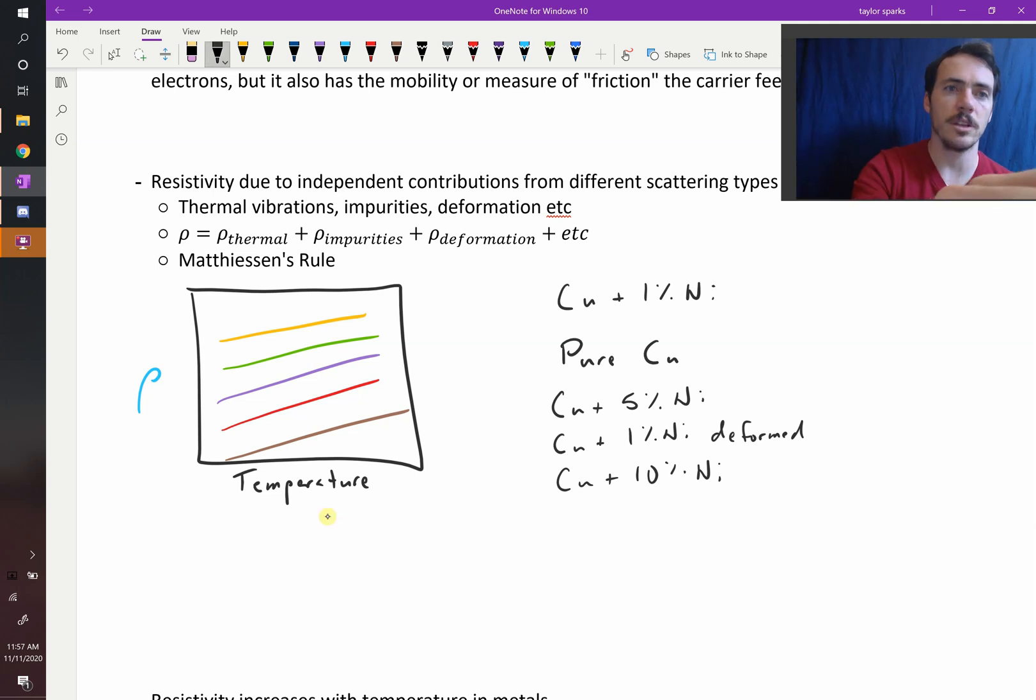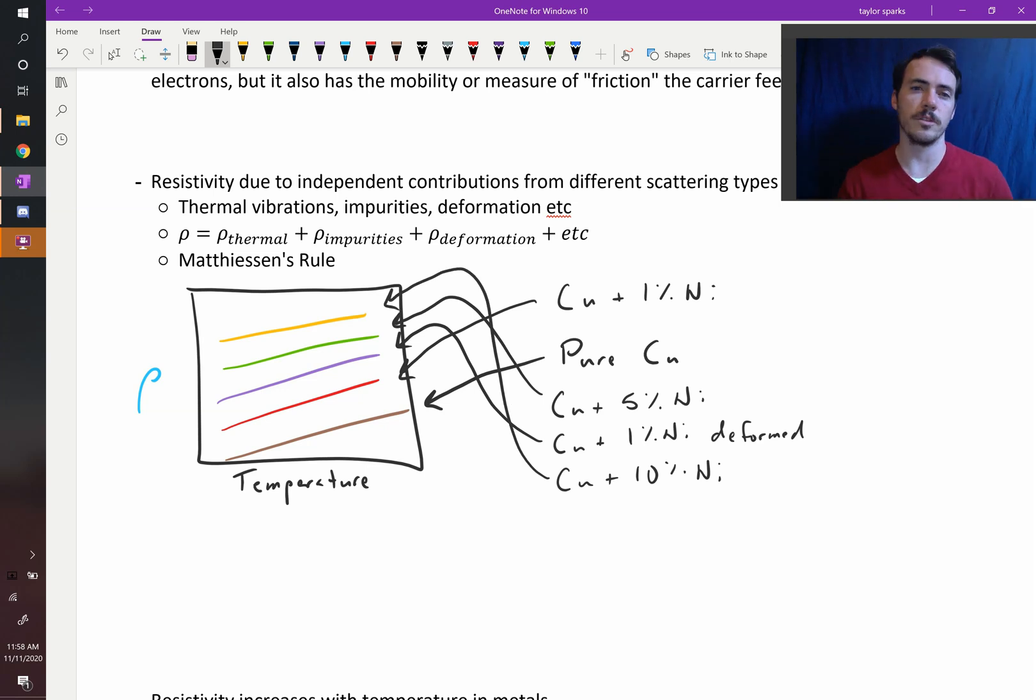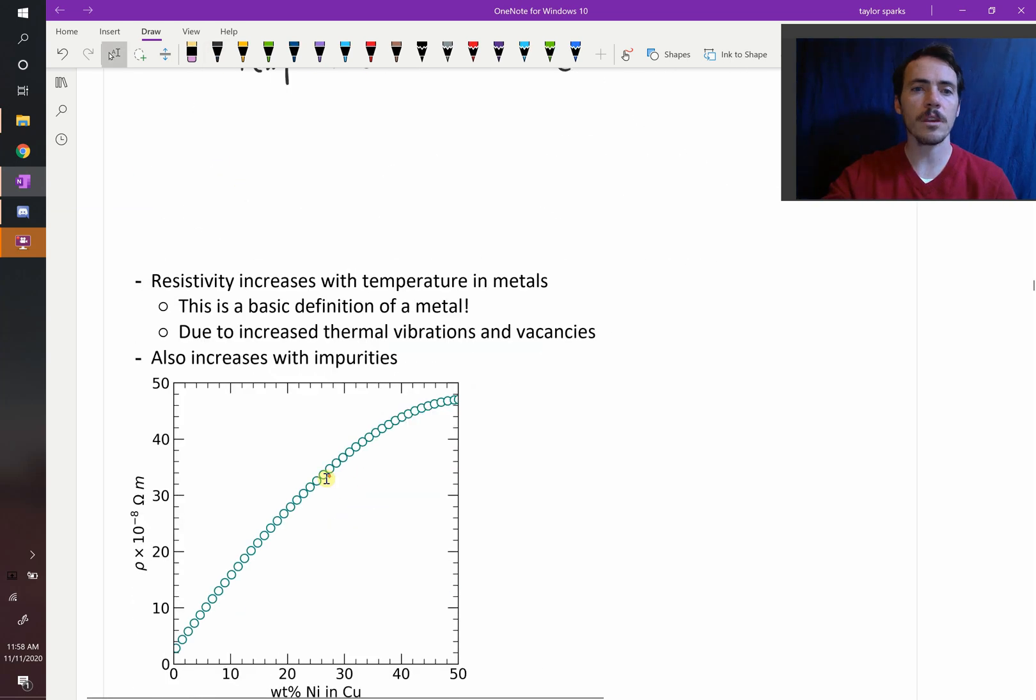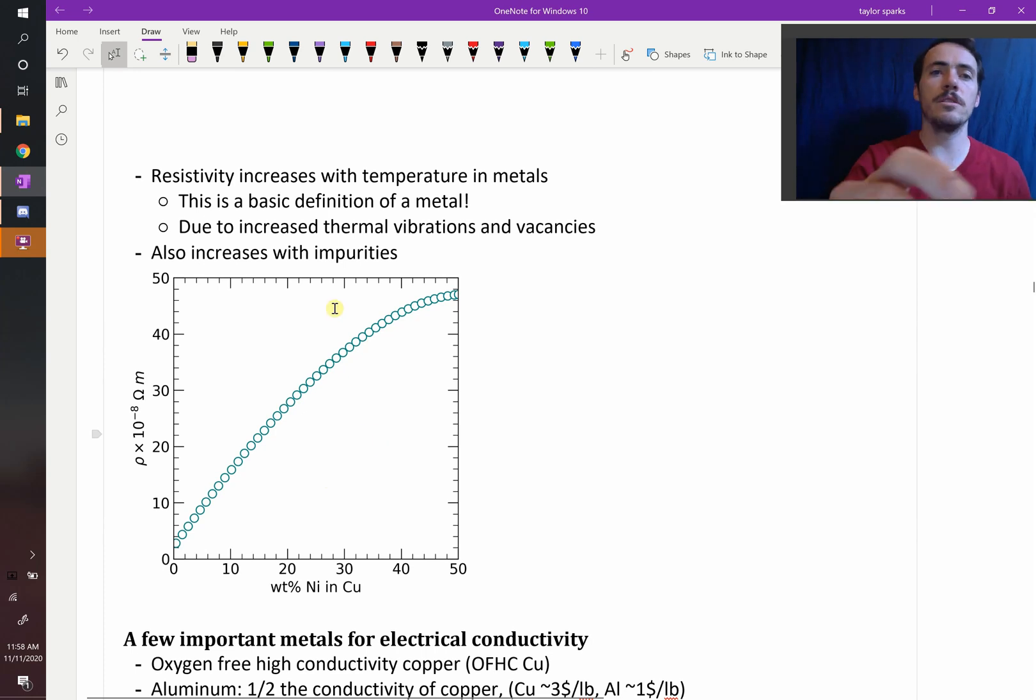This allows us to do this matching game. Let's match these materials: What would be the lowest resistivity material? Would it be copper mixed with nickel, pure copper, copper with 5% nickel, copper with 1% nickel but deformed, or copper with 10% nickel? The lowest one is going to be pure copper right here. Depending on the influence of deformation and impurities, a little bit of nickel would probably put us right there, then a little bit of nickel with deformation might put us there. Five percent would put us there because it's even greater, and then ten percent—quite a bit of impurities—are going to put us there. That's the idea behind Matthiessen's Rule: you can add these resistivities linearly. Resistivity increases with temperature in metals.